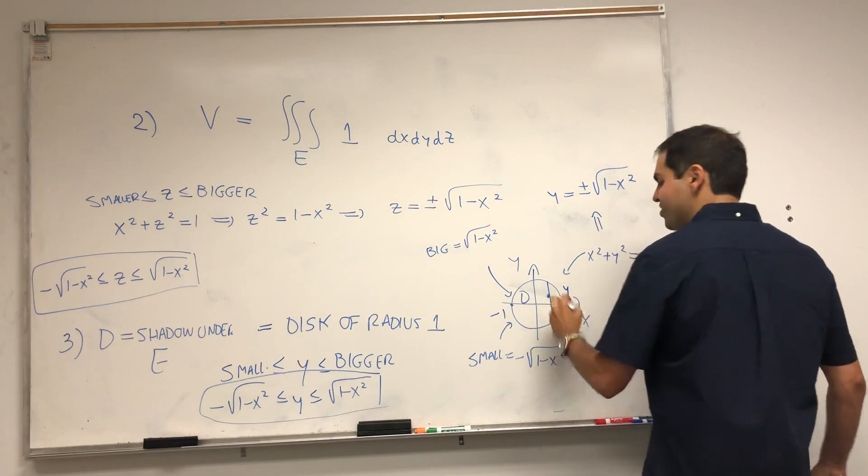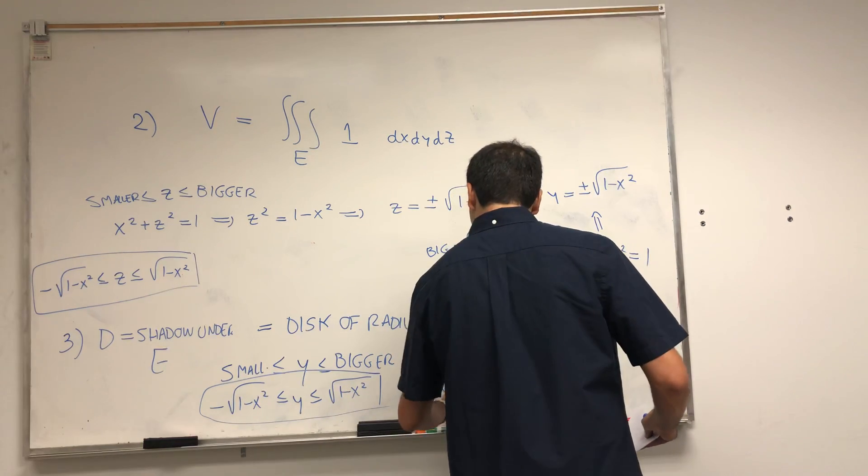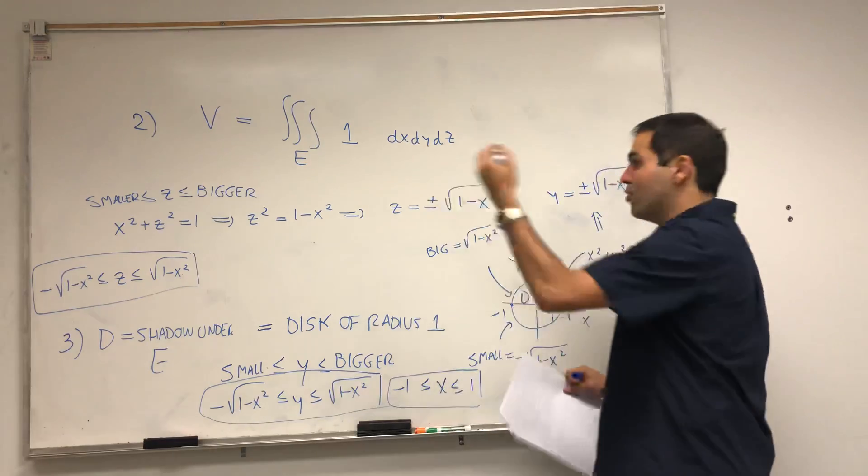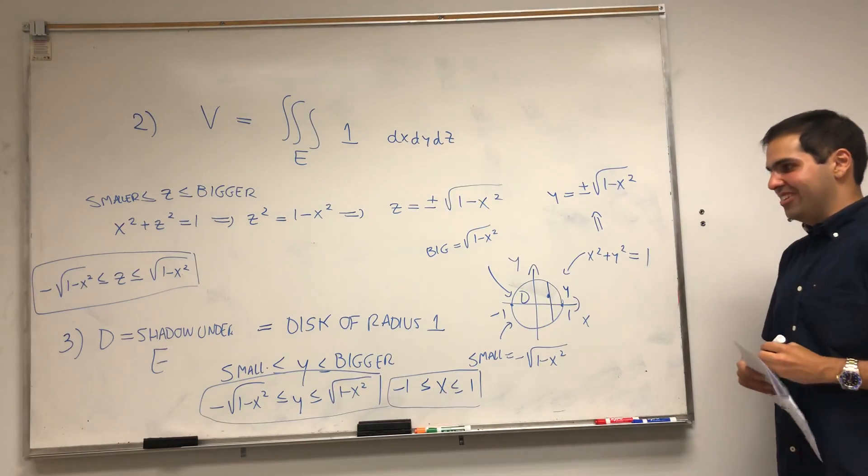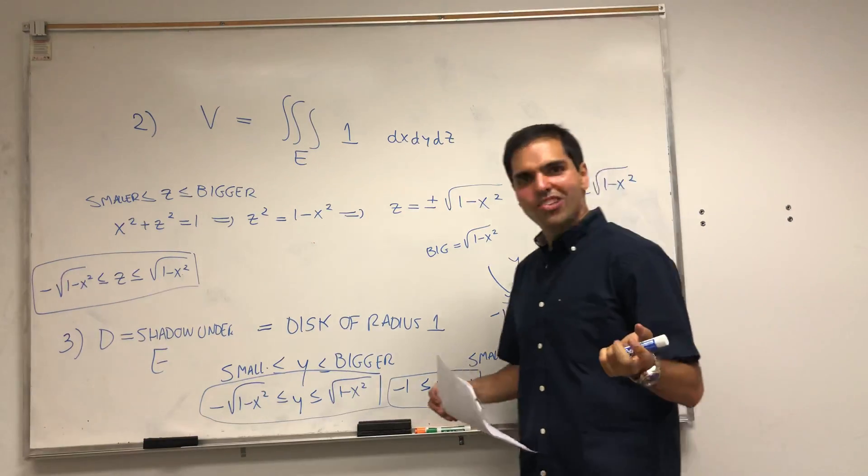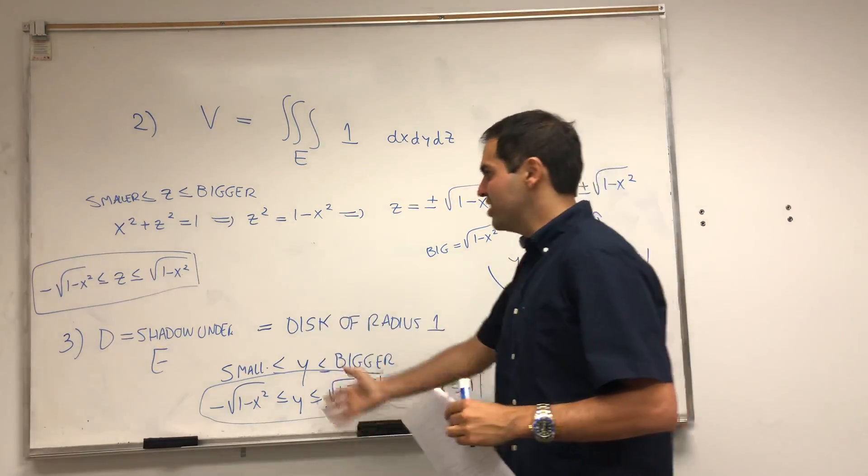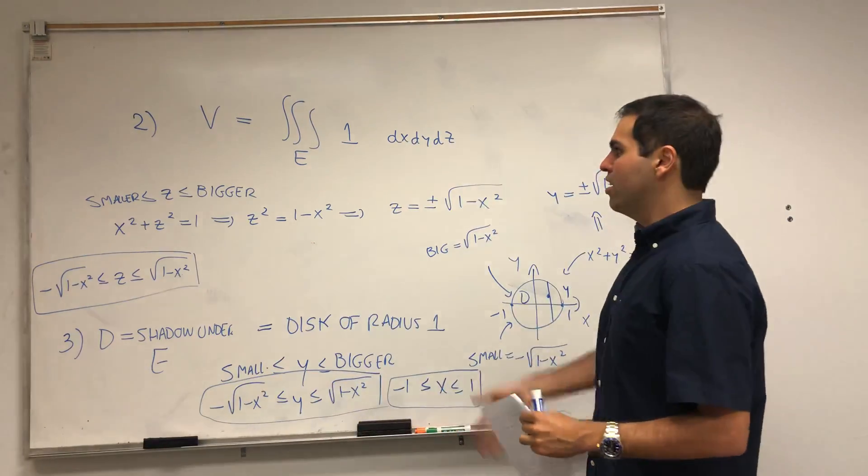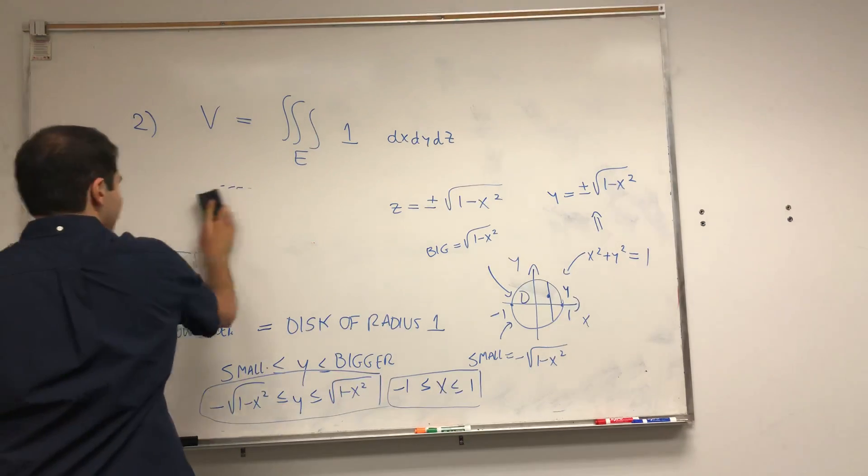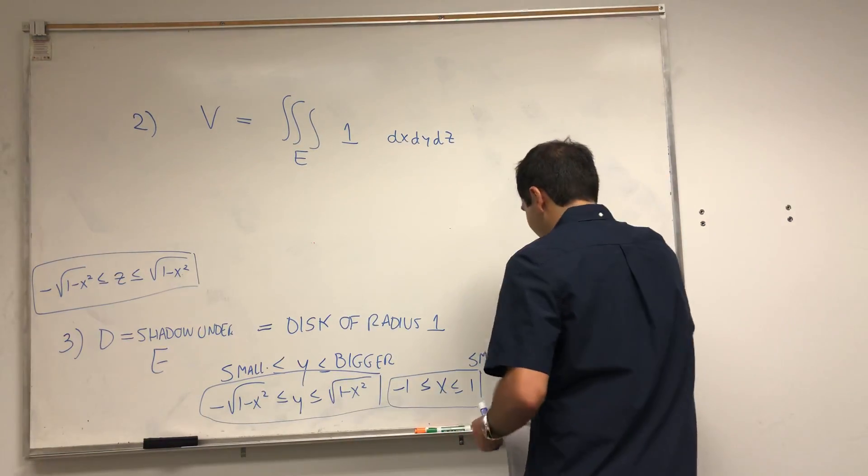And so to evaluate it directly, we need y between two things. So y is between bigger and smaller. And in particular, if you solve for this, you get y is plus or minus square root of 1 minus x squared. So the bigger function is square root of 1 minus x squared. And the smaller one is minus square root of 1 minus x squared. Which gives us a second inequality. And lastly, we just need to figure out x. But look, x is just between minus 1 and 1. The outer one only has to be a constant. In other words, this thing was impossible to visualize. We're still able to write them in terms of equations. And once we have that, we can just evaluate the integral. So, let me keep our equations and erase everything else.